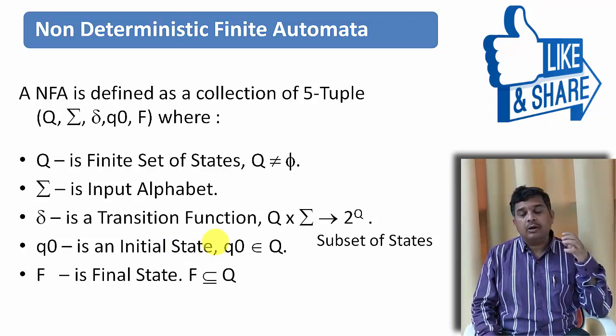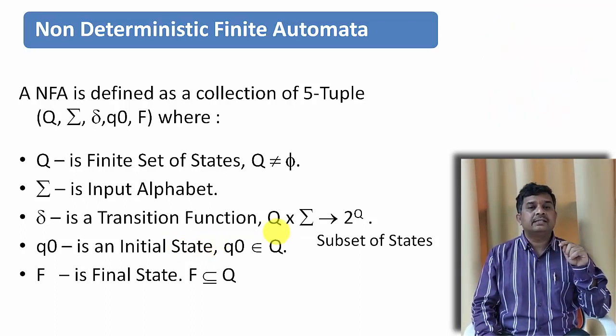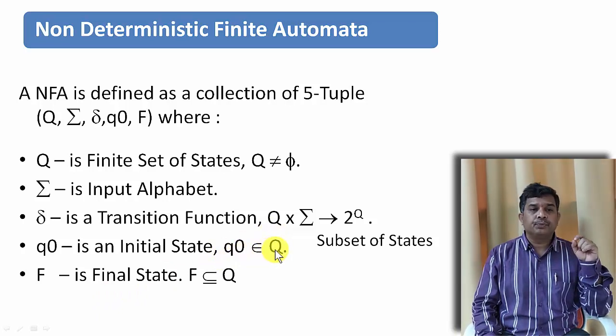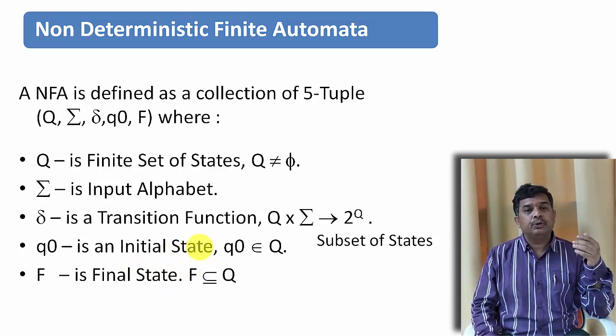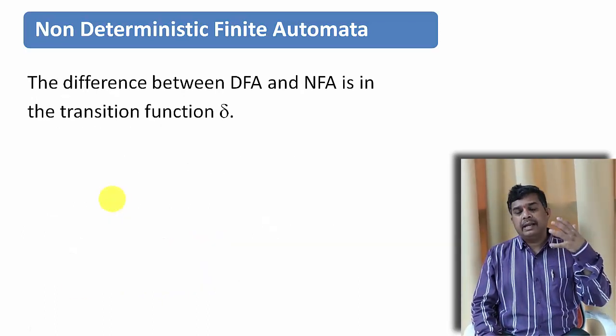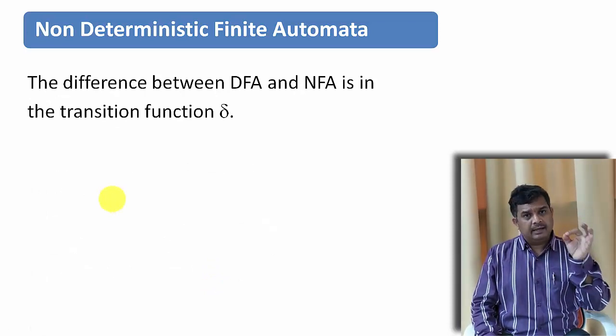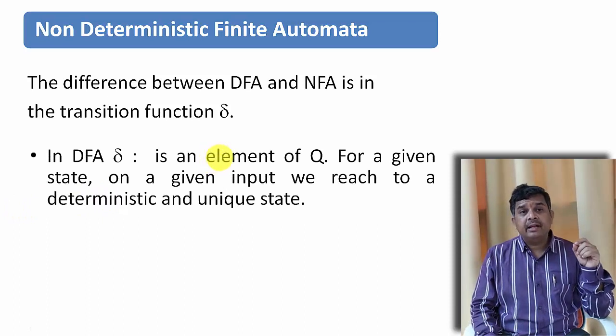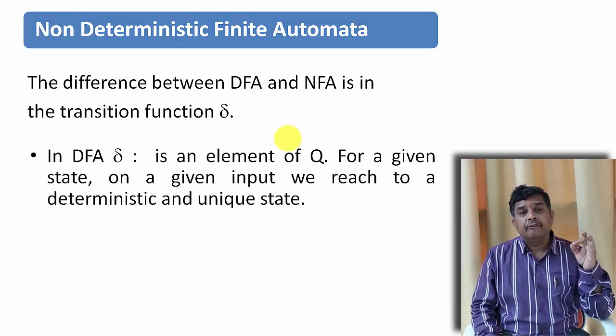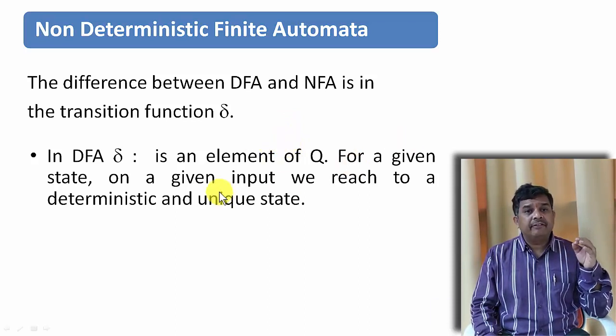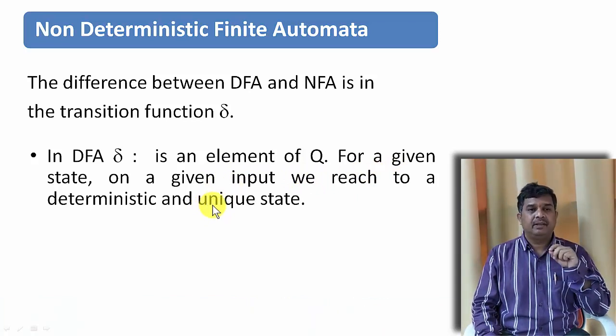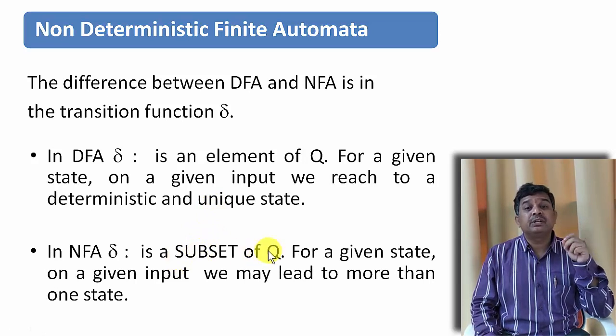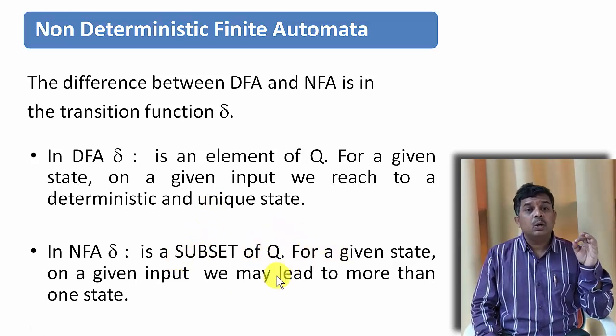Q0 is the initial state. As we have already known, there will be only one initial state. So we can say Q0 belongs to Q. And we know there can be several final states. So F is subset or equal to Q. When we talk about NFA and DFA, the basic difference is in the transition function. In DFA, the transition function maps to an element from the set of states. It means for a given state, on a given input, we reach to a deterministic and unique state. But in case of NFA, it is a subset of Q. It means for a given state, on a given input, we may lead to more than one state.